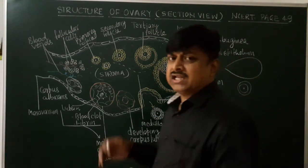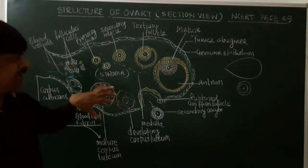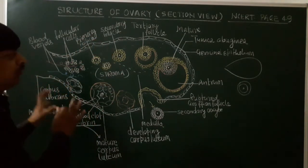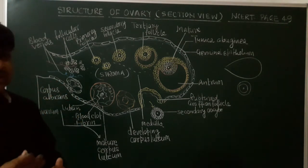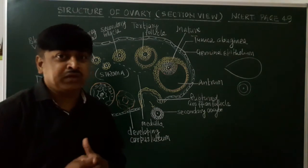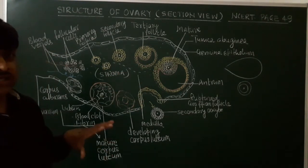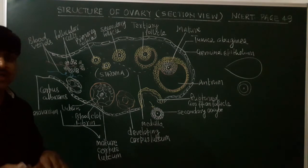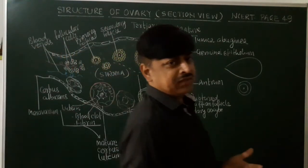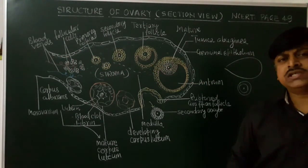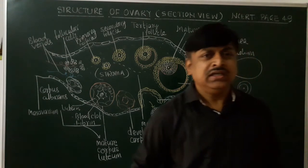This is all about the internal structure of the ovary. Through this lecture you have learned only the internal structure of the ovary. Through a separate video, once again I am telling you, I will explain the process of oogenesis, where you will get the idea about the primary, secondary, and tertiary follicles as well as the Graafian follicle. I hope you are able to understand the internal structure of the ovary. In the next video I will come with another topic — oogenesis in the case of females. Goodbye and Jai Hind, my dear students.